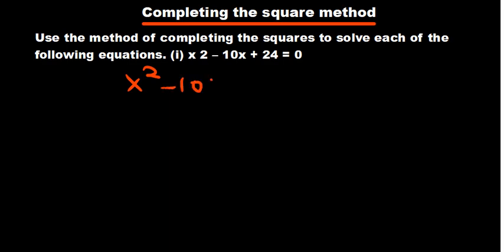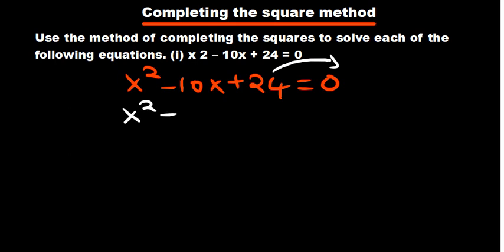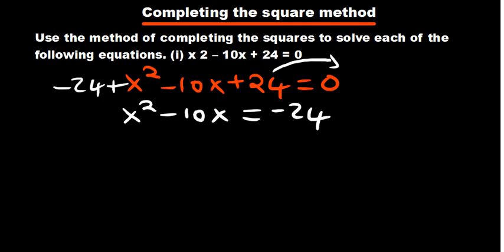Our first equation is x squared minus 10x plus 24 equals 0. The first step is to take the constant to the other side — we apply the additive inverse on both sides — giving us x squared minus 10x equals negative 24.